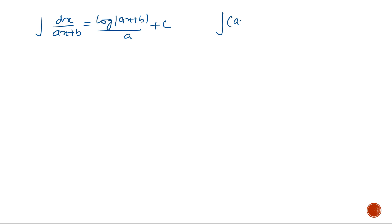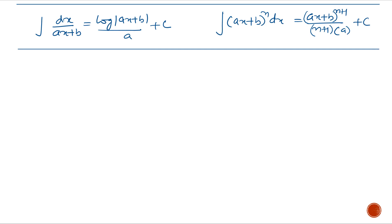Whenever we have the integration of (ax + b) raised to the power n, the answer is (ax + b)^(n+1) divided by (n+1) multiplied by a, plus c. Now we will solve some questions on that.